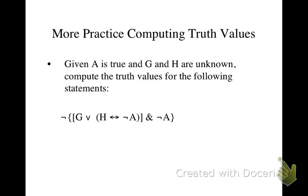We have A is true, and then we have H and G are unknown. Well, if A is true, then not A is false, and so this conjunction here is false.